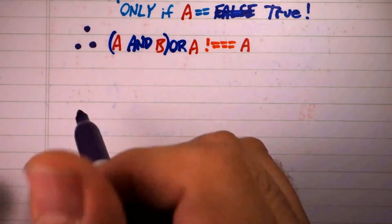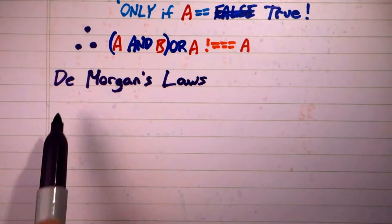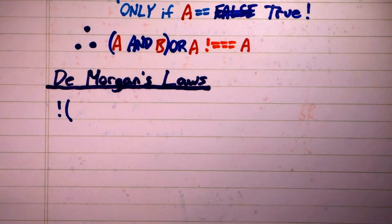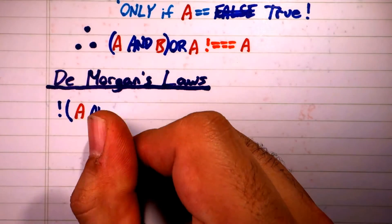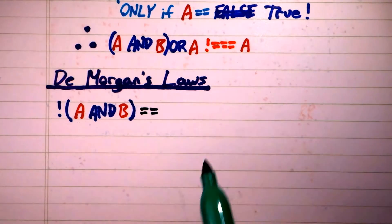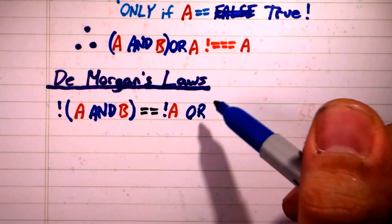Now, there's one more thing I want to show you called DeMorgan's laws. Basically, DeMorgan's laws are a set of logical equivalencies that are very useful when handling negation. The rules are NOT A AND B equals NOT A OR NOT B.